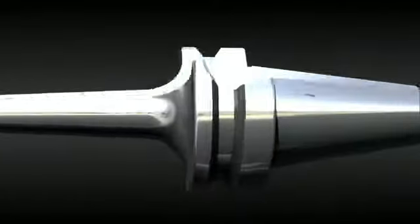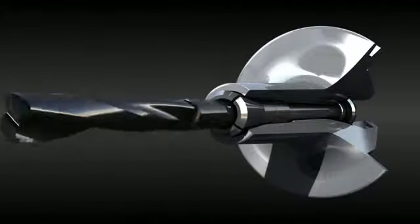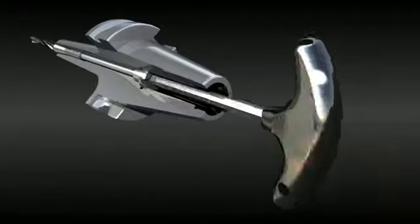The slim fit collet chuck uses a wrench for tightening with an internal draw bar that minimizes radial distortion of the collet.